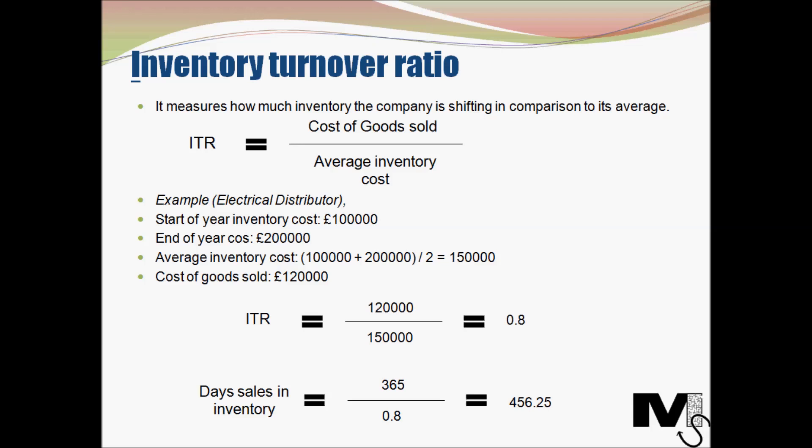For example, if at the start of the year the inventory cost for an electrical distributor is £100,000 and at the end of the year it is £200,000, the average inventory cost is £100,000 plus £200,000 divided by two, which equals £150,000. If the cost of goods sold is £120,000, the inventory turnover ratio is £120,000 divided by £150,000, which is 0.8 — close to 1, so the company is doing a good job managing its inventory.